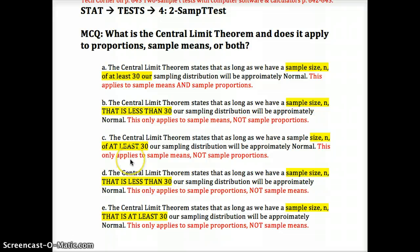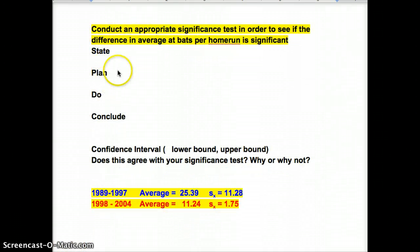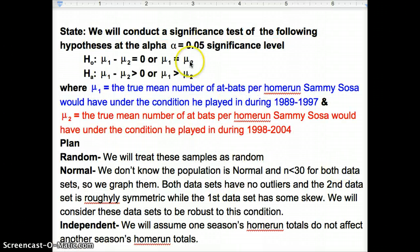Pause here, and then we're going to get back to the example question. We're going to conduct a significance test in order to see if the difference in average at-bats per home run is significant. Here we have 89 to 97. Here we have 98 to 2004. Take a look at them and see what you think just by looking at the averages and the standard deviations. Keep in mind, anytime you see a problem like this, if you're not given state plan do and conclude, write them down and fill them in as needed. Let's do the first part, and I'll let you finish the question.